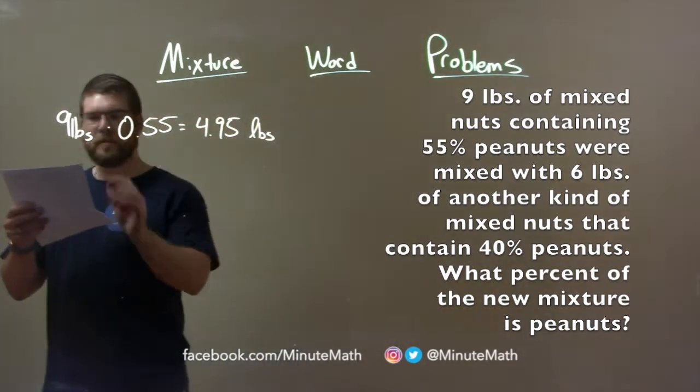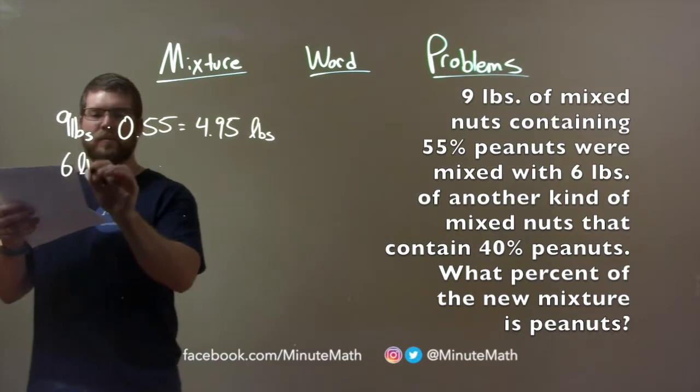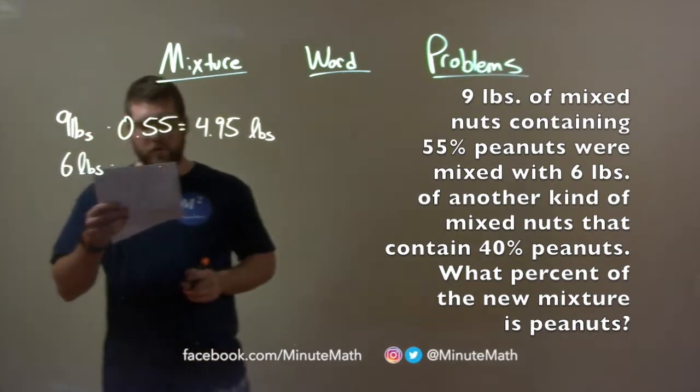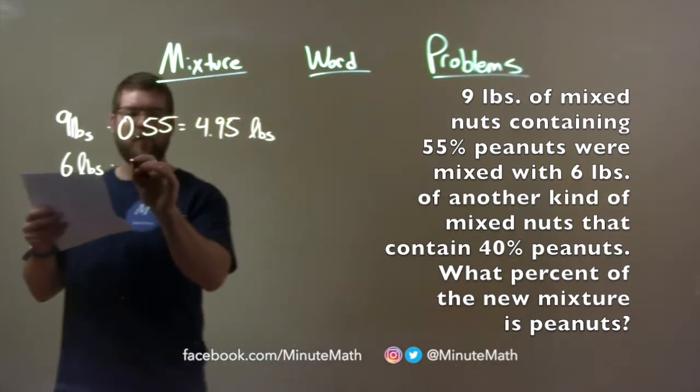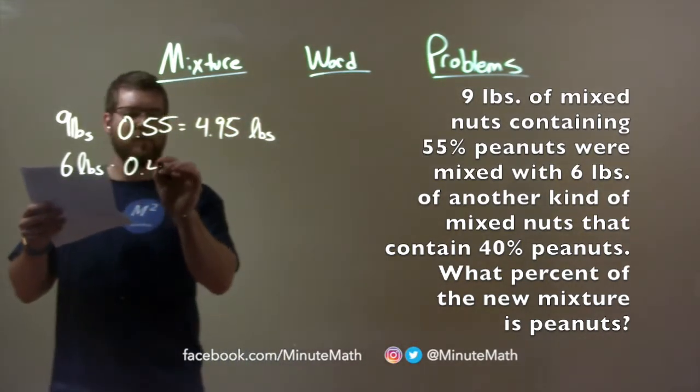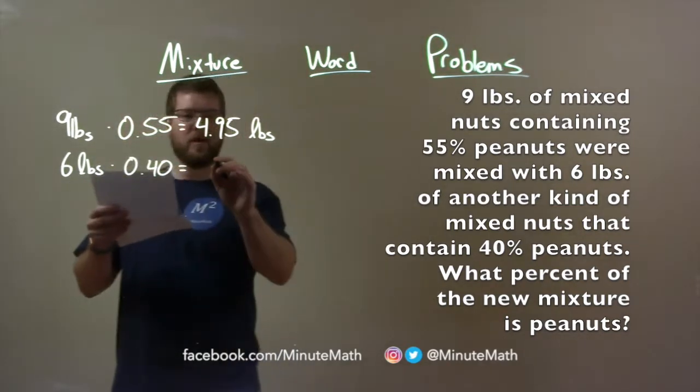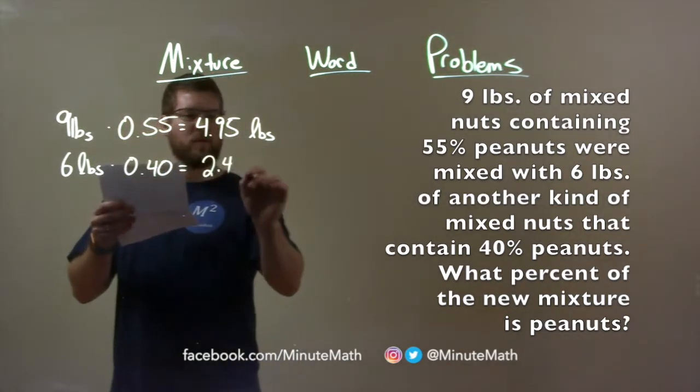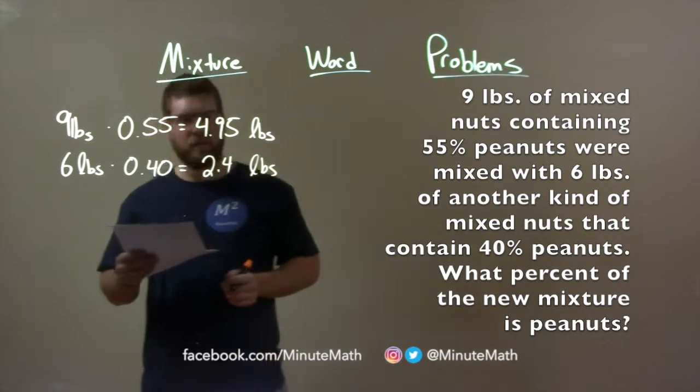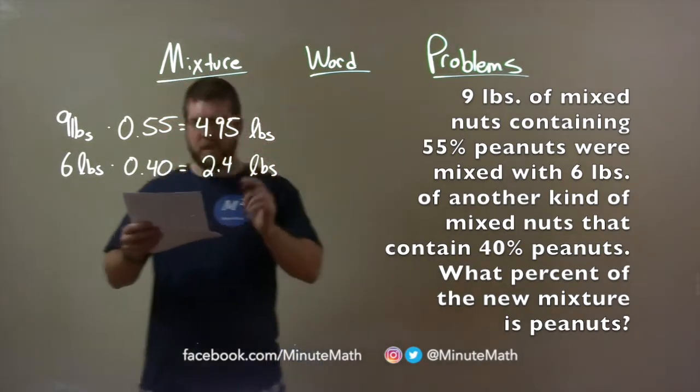The second mixture contains six pounds of mixed nuts. And that one had 40% or 0.40 as a decimal, which is peanuts. Multiplying that out, and we have 2.4 pounds in the second mixture of peanuts.